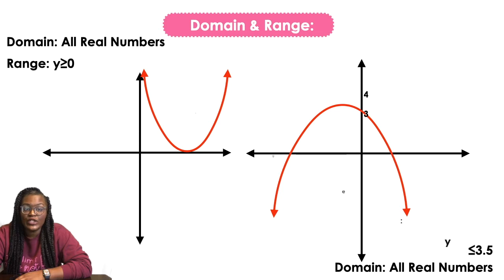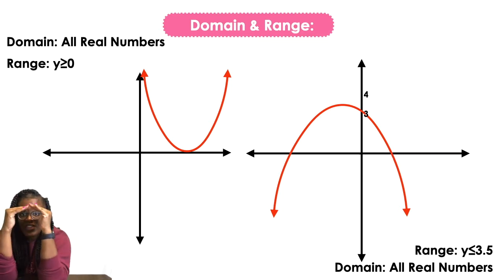The domain is gonna be all real numbers of course for the second one, but the range is actually going to be y is less than or equal to 3.5, because the top of that parabola is right around the middle of three and four, so that's about 3.5.